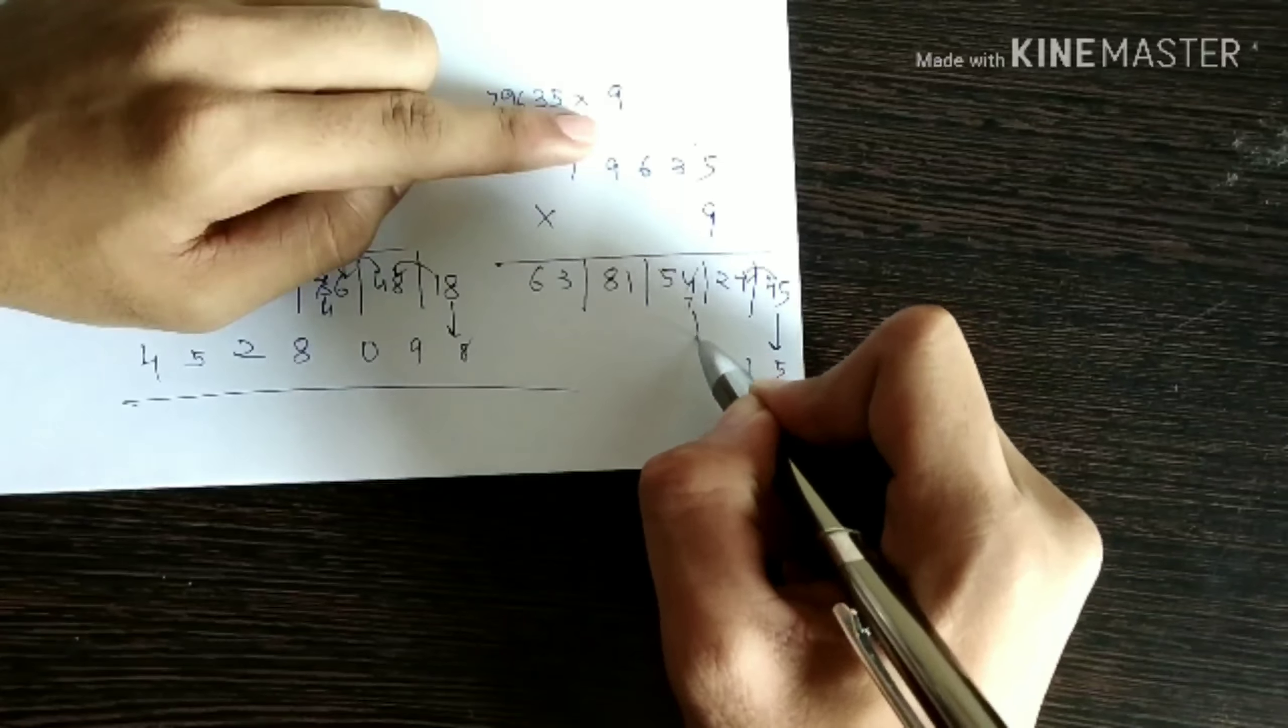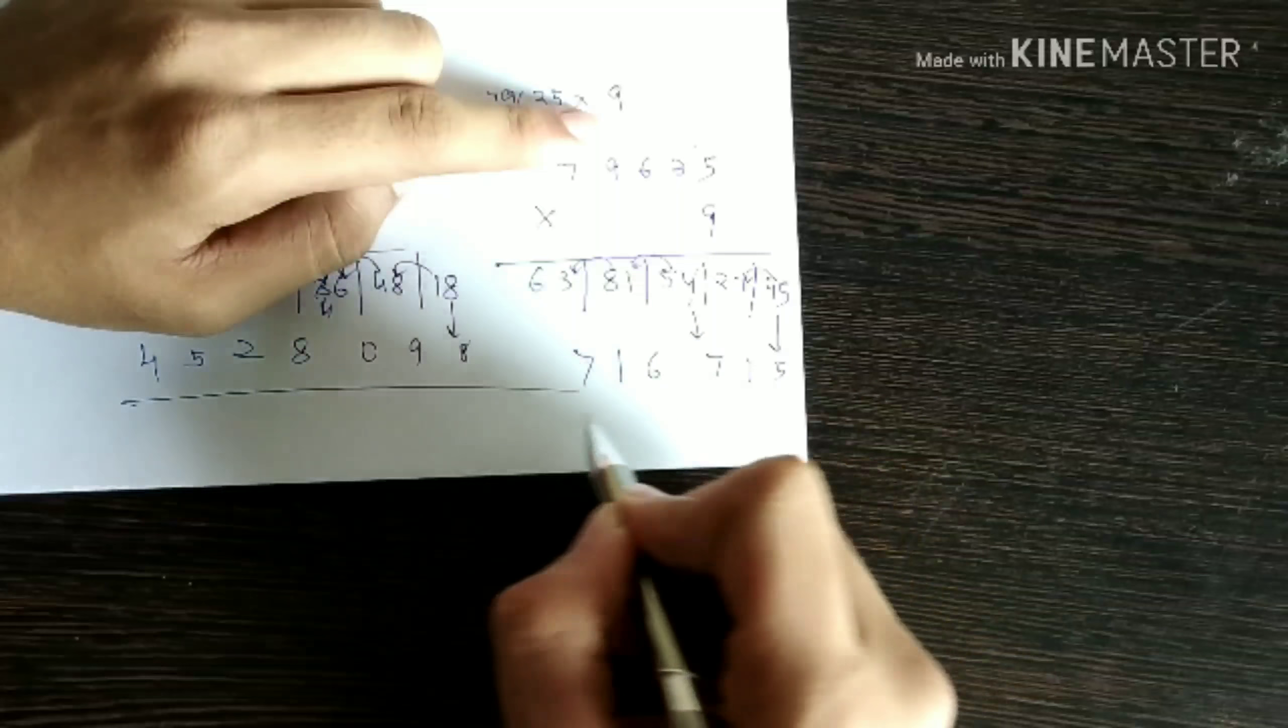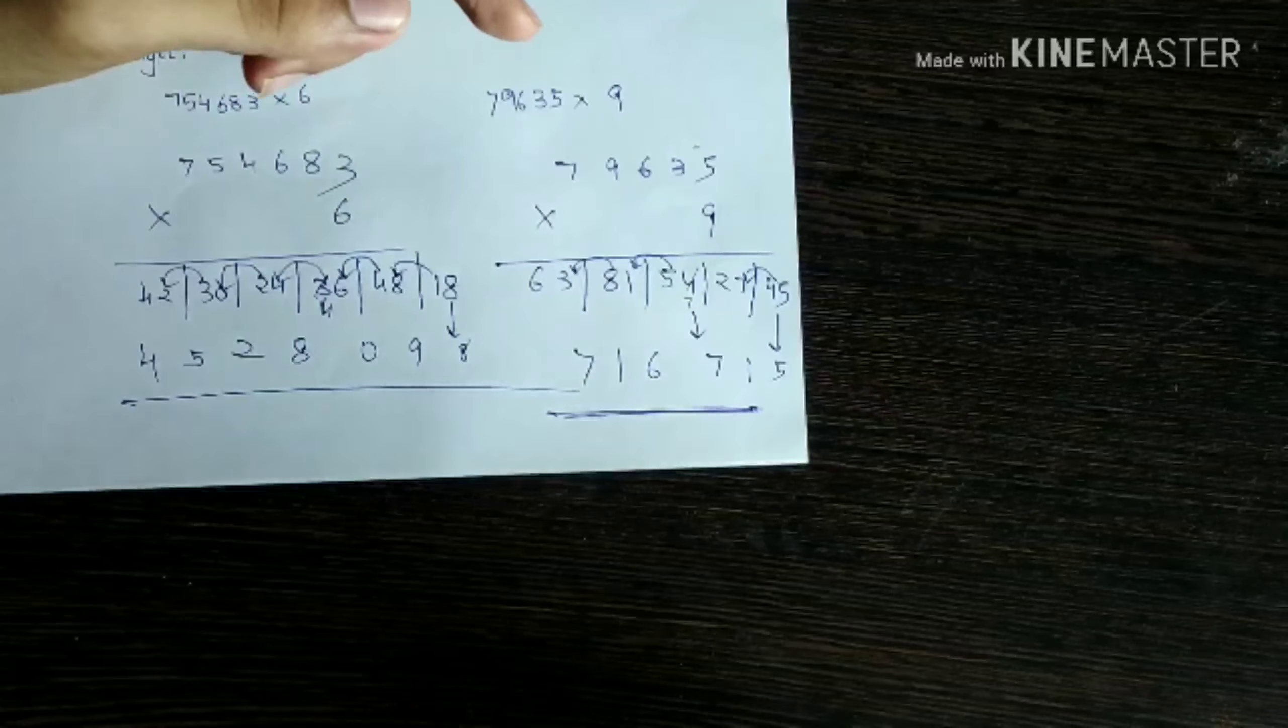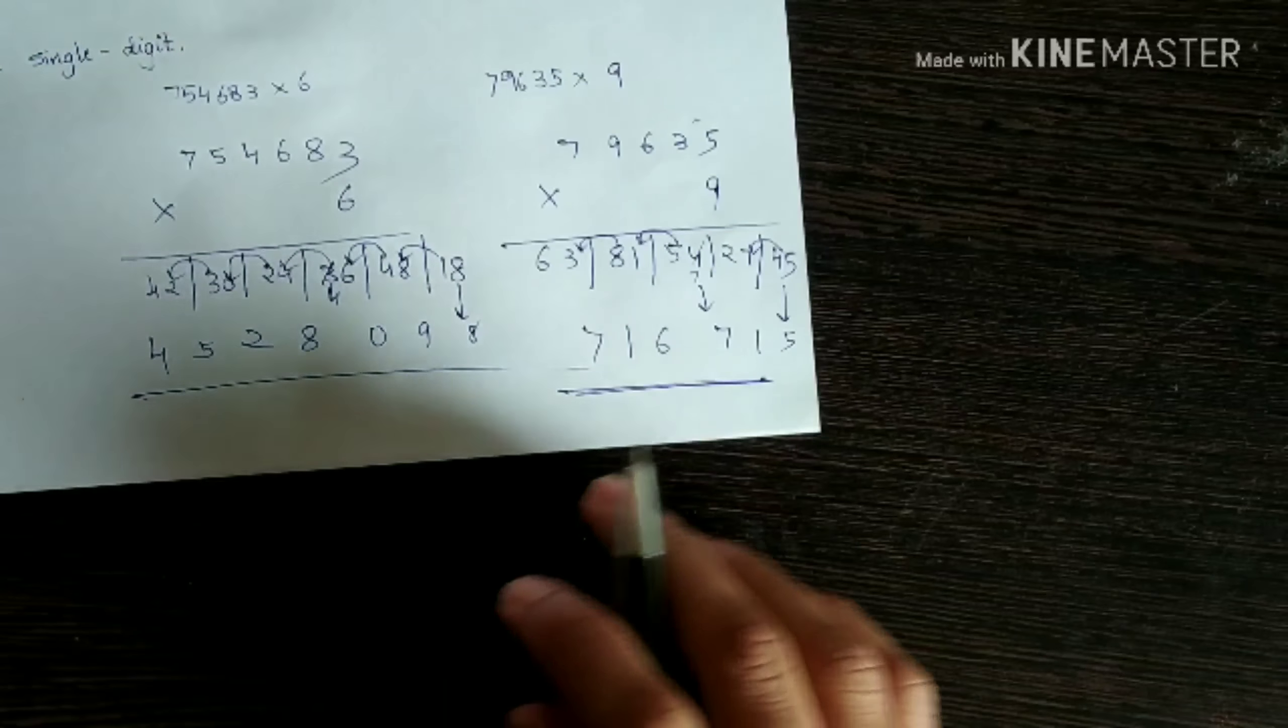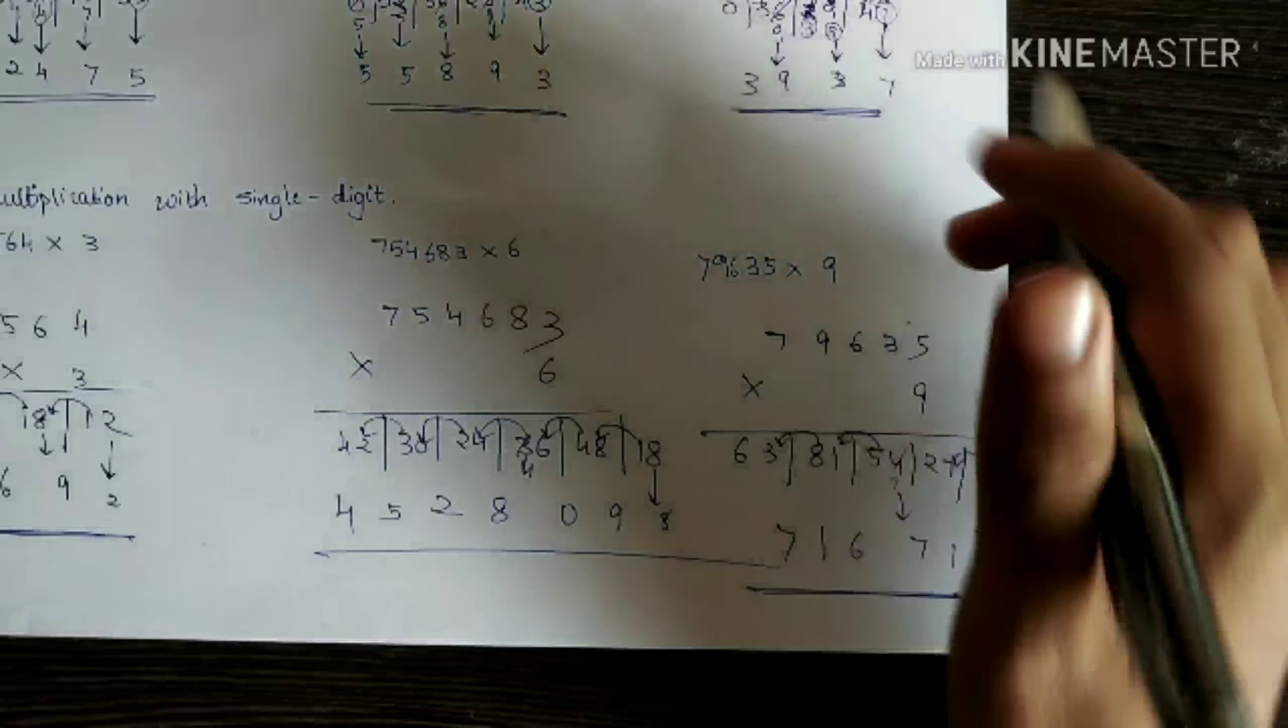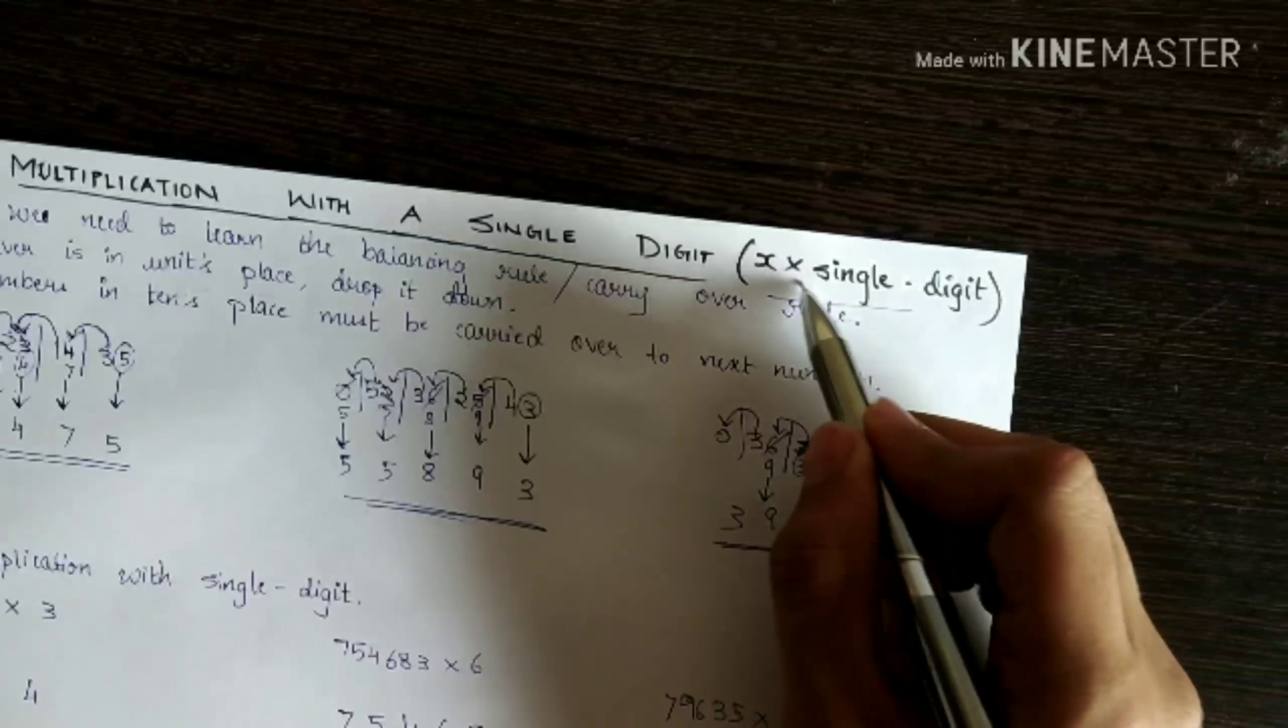Eight plus three is eleven, seven keep one. One plus six is seven. Finally seven one seven one five is our answer. In this way you are supposed to do multiplication of any number with a single digit.